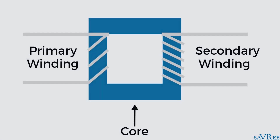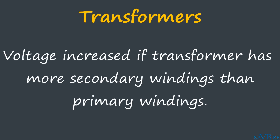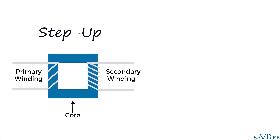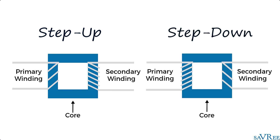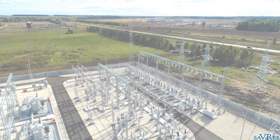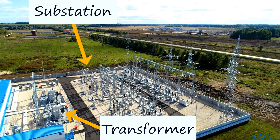If we add more windings to the secondary side of our transformer we can increase the voltage; if we reduce the number of secondary windings we reduce the voltage. Since we want to increase voltage to reduce current and reduce power losses, transformers installed directly after power stations have many more secondary windings than primary windings — these are called step-up transformers. Transformers that reduce voltage are called step-down transformers. The transformer directly after a power station is called a generator step-up transformer, or GSU. Once we've increased the voltage we send our electrical power to a substation and then into our transmission lines.